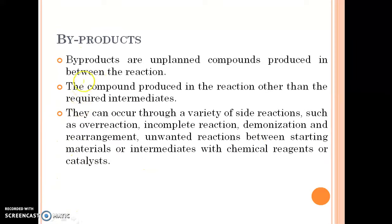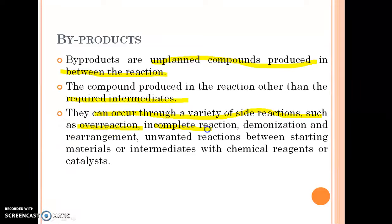Byproducts are unplanned compounds produced during the reaction. The compound produced in the reaction other than the required intermediates is also called a byproduct. Transformation products can occur through a variety of side reactions such as over-reaction, incomplete reaction, dimerization, and rearrangement of unwanted reactions between starting material or intermediates with chemical reagents or catalysts.